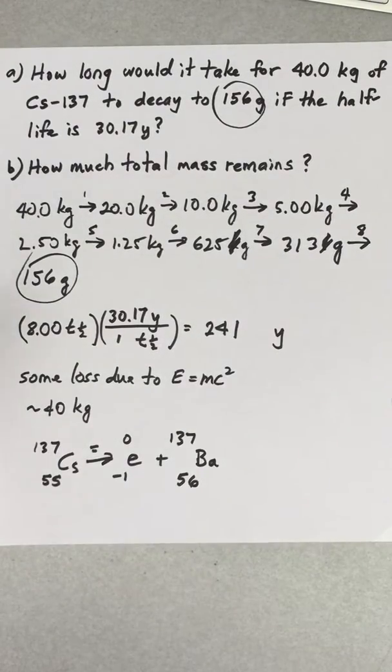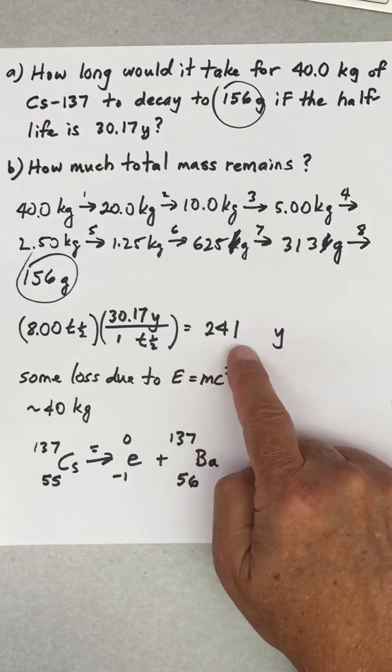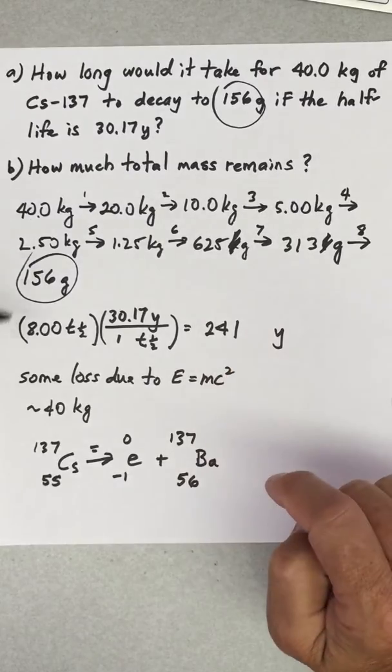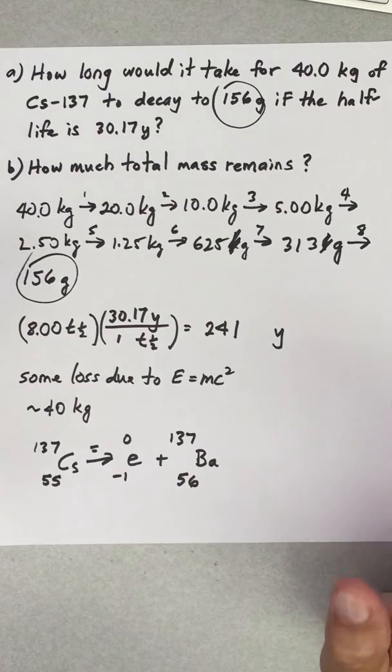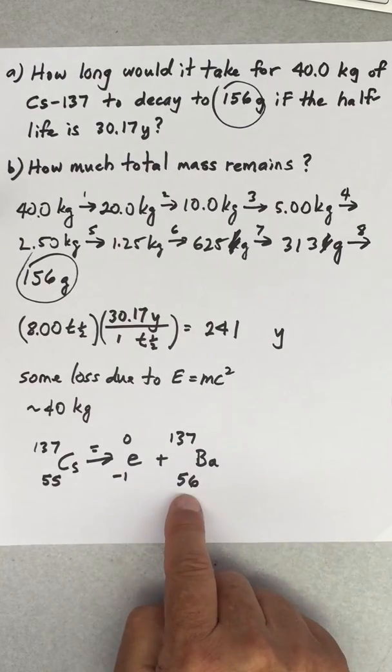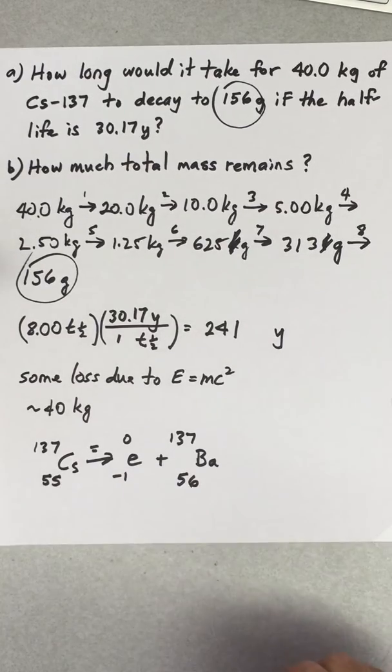But the whole point about part b is getting you to understand that there's a very small loss of mass due to E equals mc squared. So you start off with 40 kilograms in a box. After 241 years goes by, you have 156 grams of cesium-137 left. The rest of it turned into barium-137 and maybe some other decay products of this, and the total mass remains about the same.